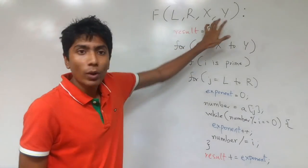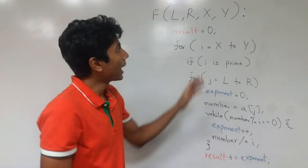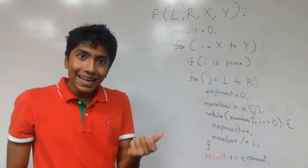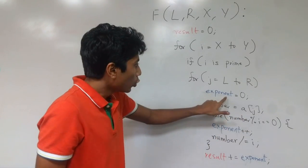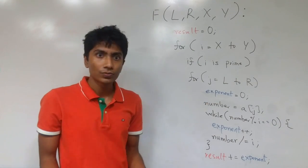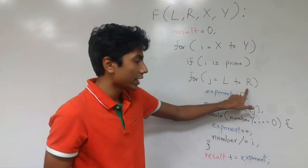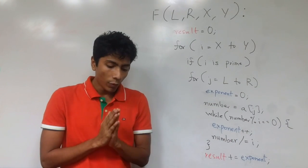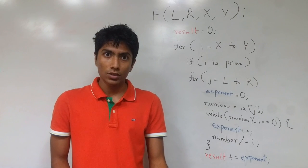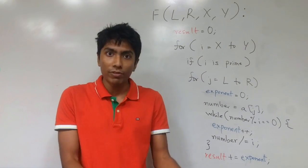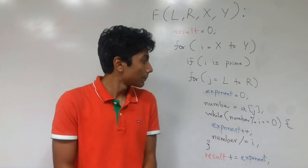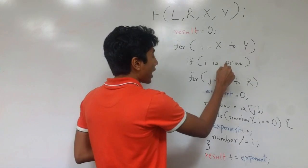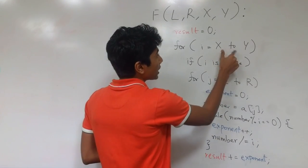You have left, right, X, and Y given to you. Left and right are a range, and X and Y are another range. Left and right define the indexes in your array whose prime exponents you have to find out. You take every element in your array in this range, find their prime exponents, and sum them all up. For each number, you find out its prime factors and the number of times those prime factors occur in its prime factorization. Sum up the exponents, and you do this for each number in the left-to-right range in the array.